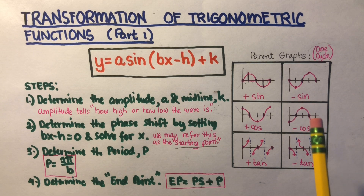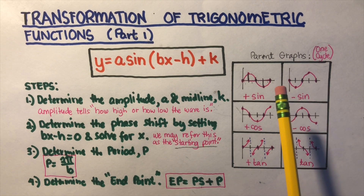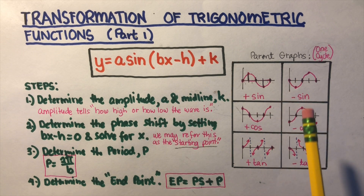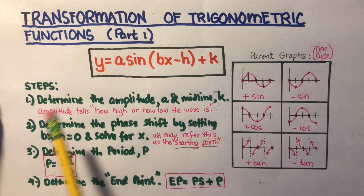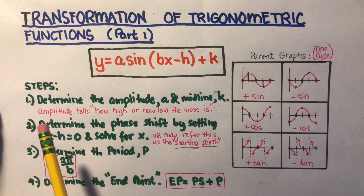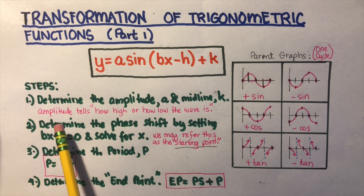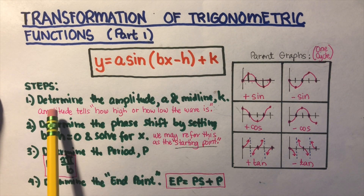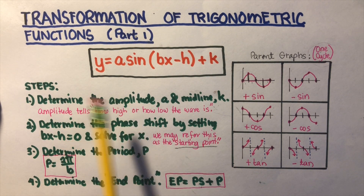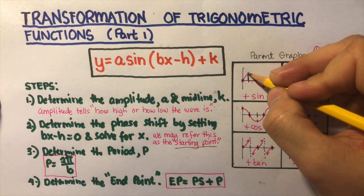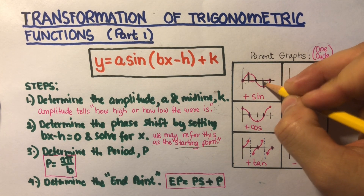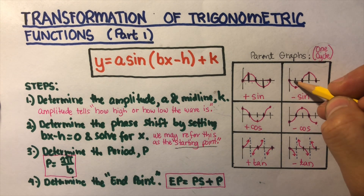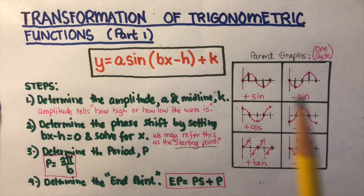Feel free to visit those videos — I will put all the links in the description box below. So these are the steps we are going to do in order to graph any trigonometric function. First, we have to determine the amplitude. Amplitude refers to how high or how low the graph is.